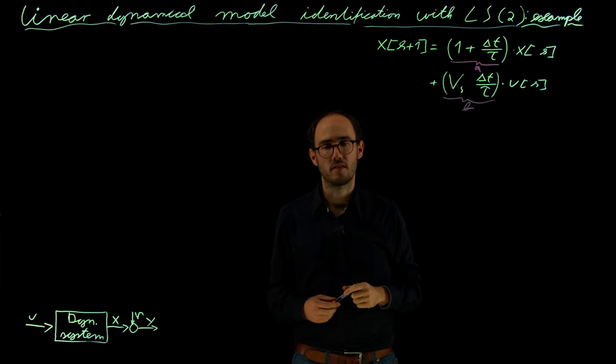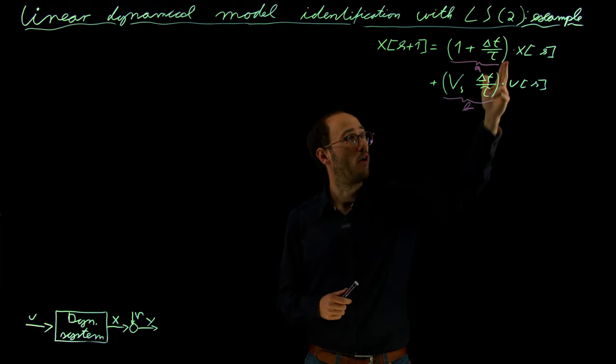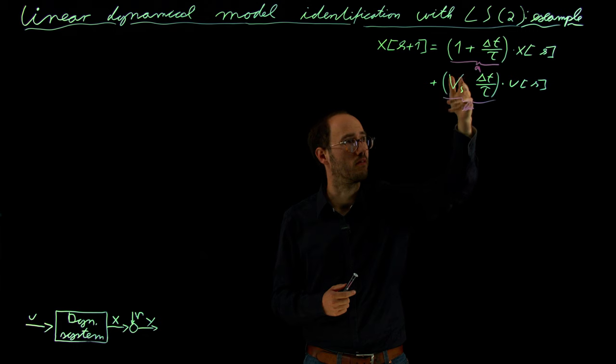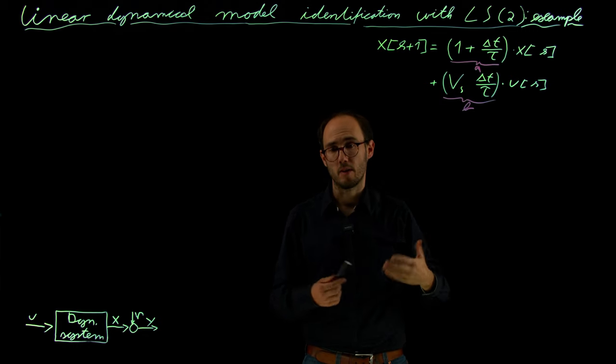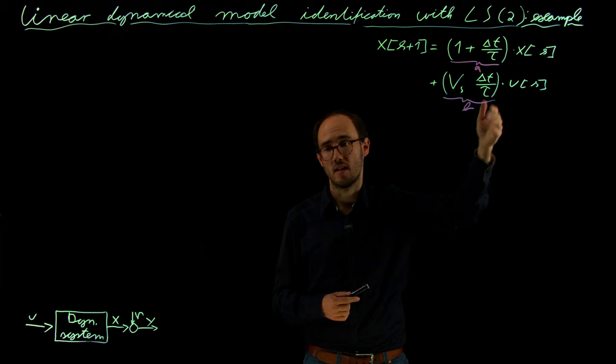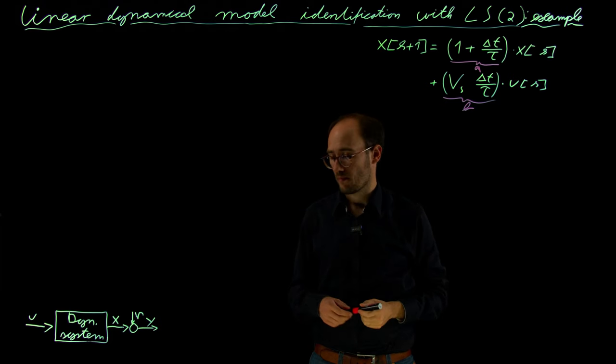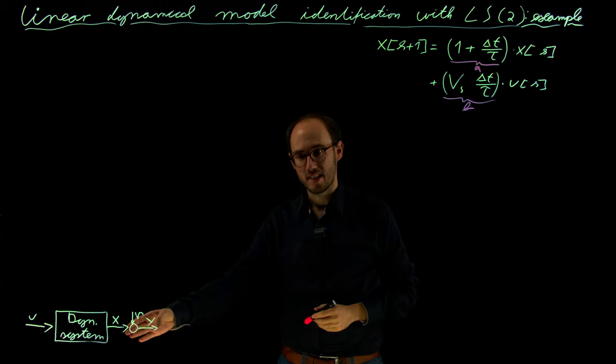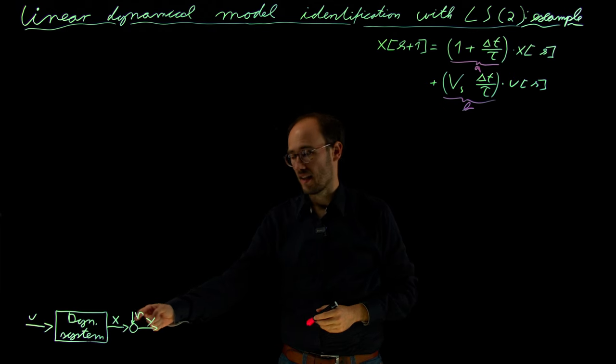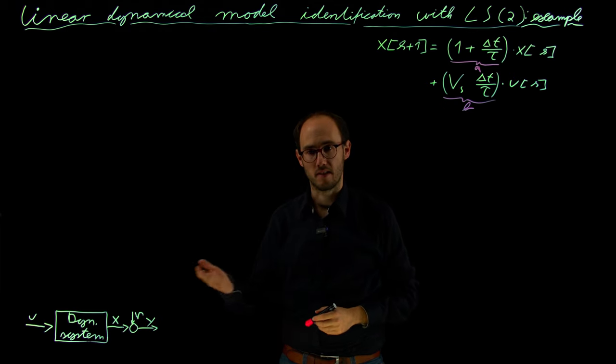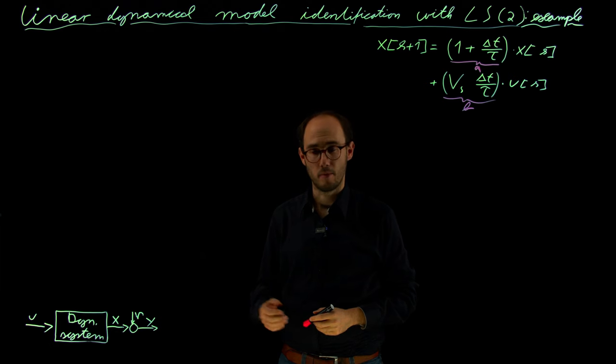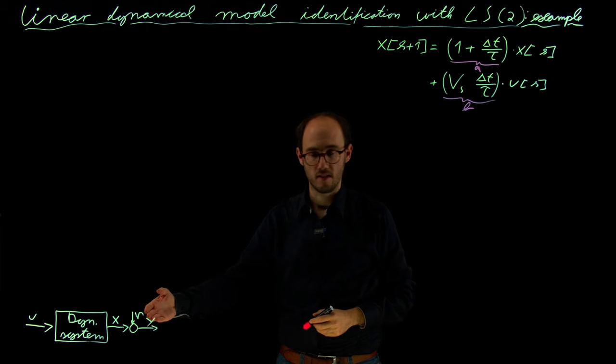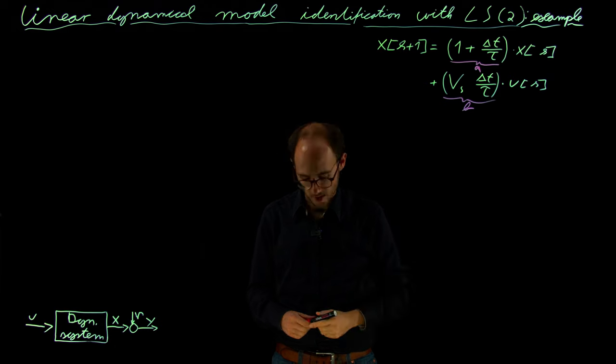So the task of this video is therefore obtaining data for x and u, and we assume that we do not know these parameters A and B or Vs, delta T and tau beforehand, but we want to identify A and B based on data over time. In this scenario, we will basically consider two cases. The first case is the noiseless case, where we assume that the noise at the output of the system is basically not present, and in the second step, we will consider a typical measurement noise which is added on the observables by our sensors before we can actually apply our least squares problem.